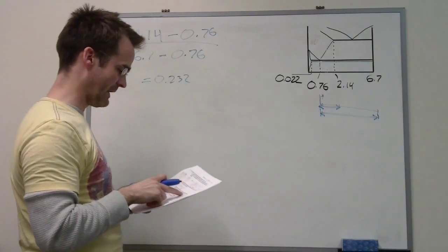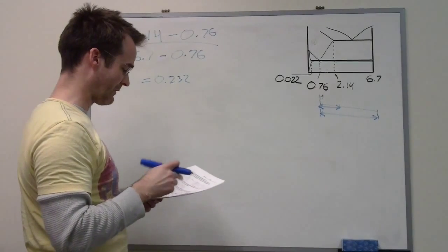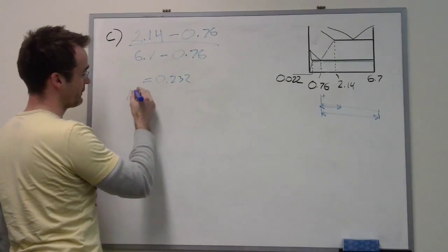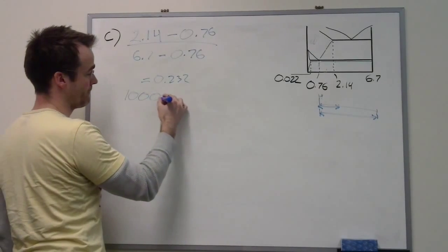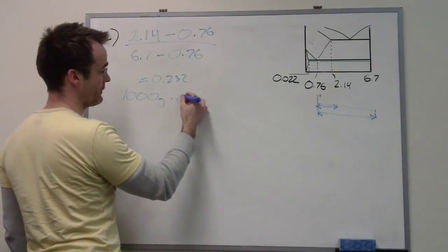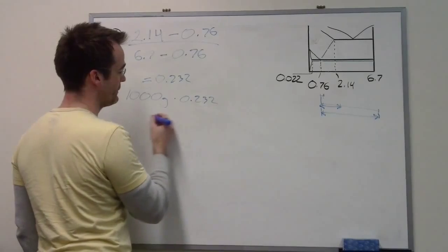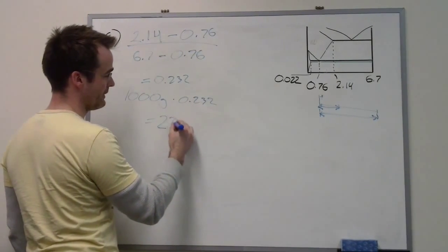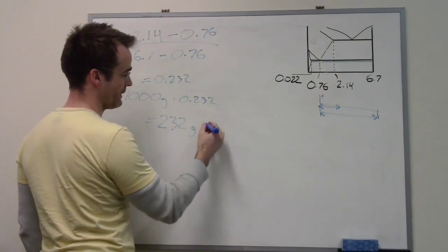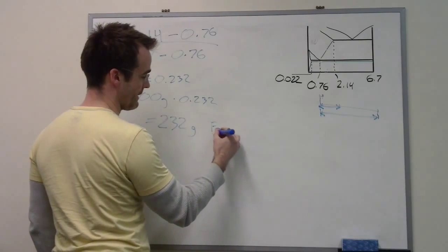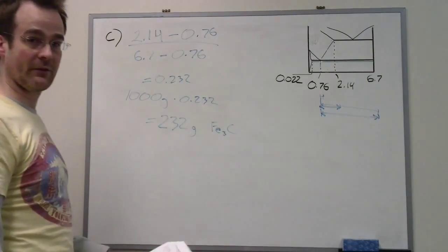And the question asks maximum mass, so it wants to know in grams. So you've got 1,000 grams total times 0.232, which is 232 grams of Fe3C. And that's the answer.